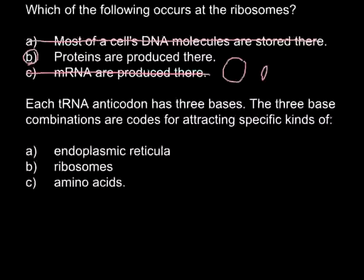Now we can go to the second question. Each tRNA anticodon has three bases. The three-base combinations are codes for attracting specific kinds of what?